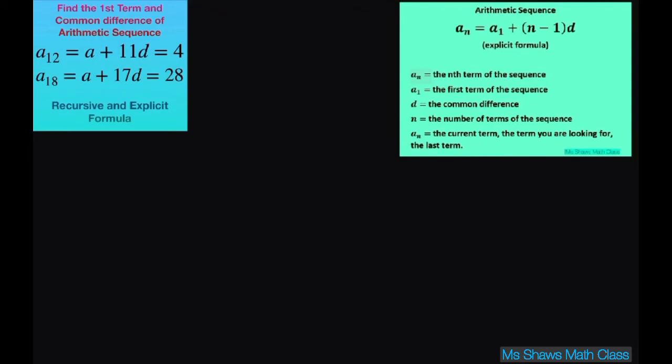Alright, so I set this up using my explicit formula here. Basically what it's saying is my 12th term is 4 and my 18th term is 28. So this is your n.